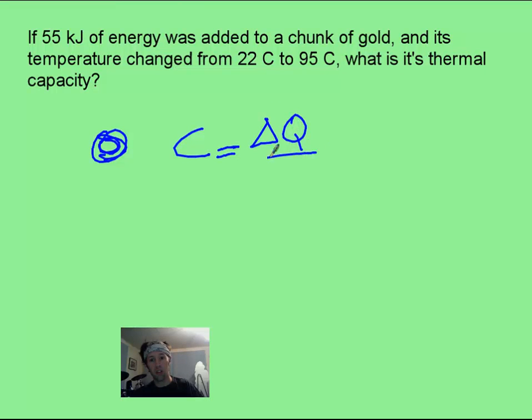is going to be change in energy divided by the change in temperature. We do this subtraction here and we're going to get a change of 73 degrees Celsius and we put in 55,000 joules because it's in kilojoules.